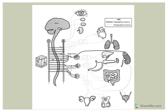The pre-ganglionic neuron is located before a ganglion. A ganglion is a group of cell bodies located in the peripheral nervous system. And then we have a post-ganglionic neuron.